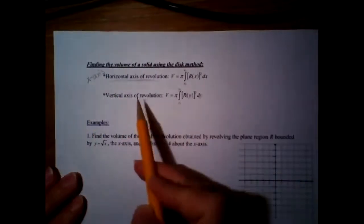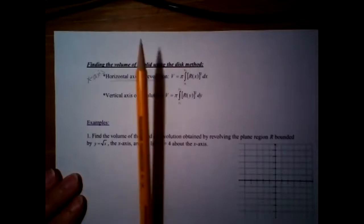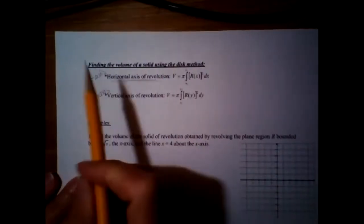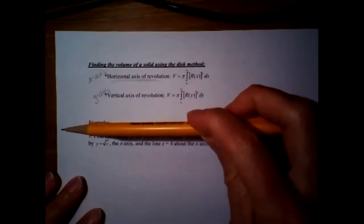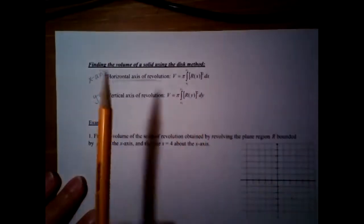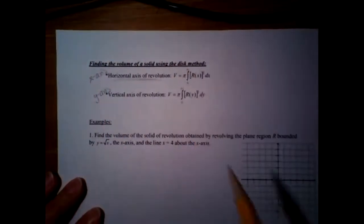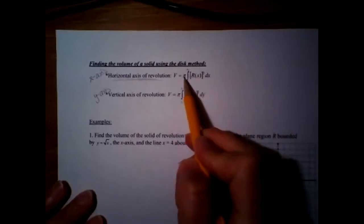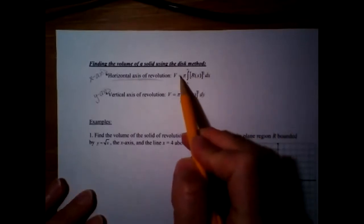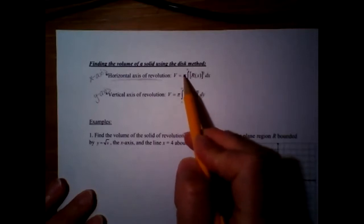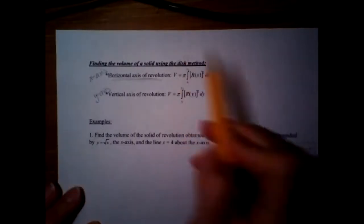If you have a vertical axis of rotation — that's like the y-axis — it's going to be a dy problem. It kind of makes sense: if you rotate around the x-axis or any other horizontal line, it's a dx problem. The y-axis or any other vertical line is a dy problem. But it's all π r squared. They're all circles or disks.